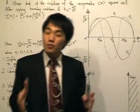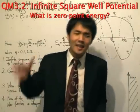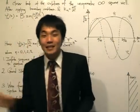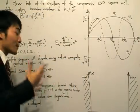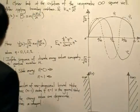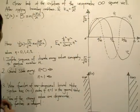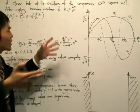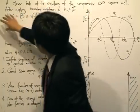Hi. Following from the last video where we got the solutions for the unsymmetric infinite square well, today we're going to look at the physical interpretations — what the mathematics tells us and what is the physical meaning for all those equations and numbers. Where we left off was finding the solutions: after applying the boundary conditions, k_n equals nπ divided by a. Solving the trigonometric function equal to zero tells us k takes discrete values, and we substitute that back into the solution.